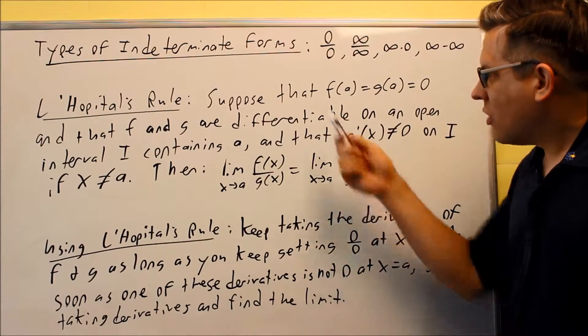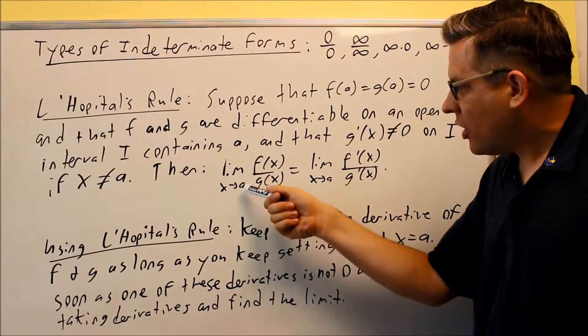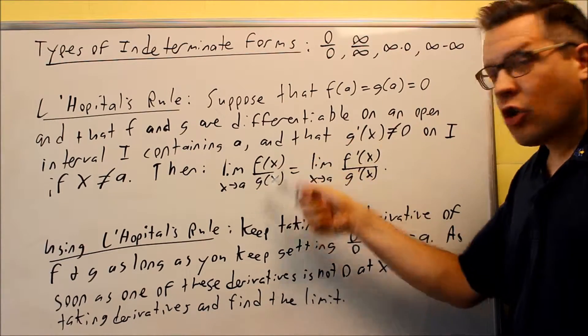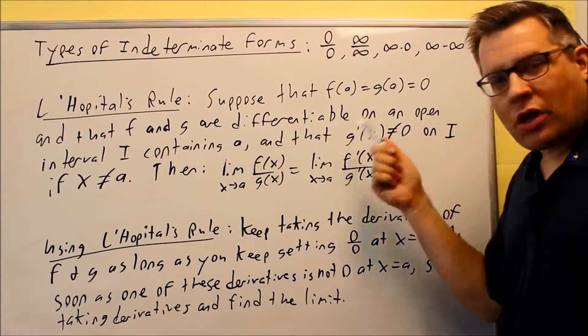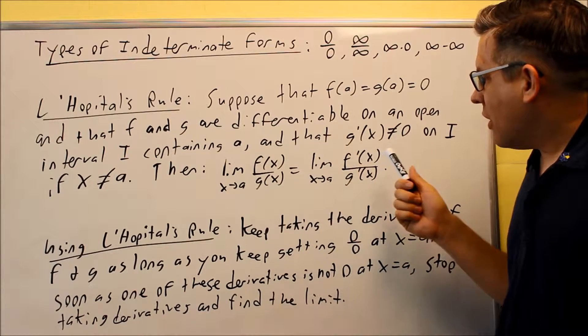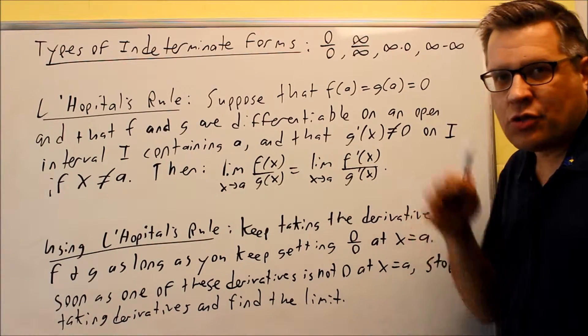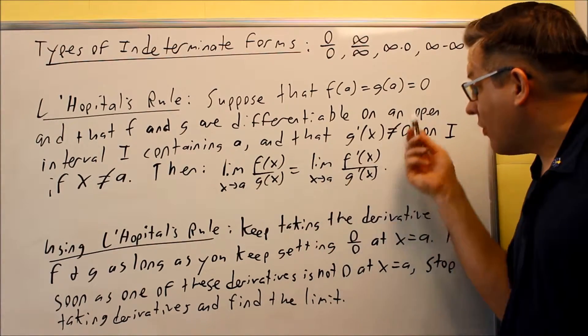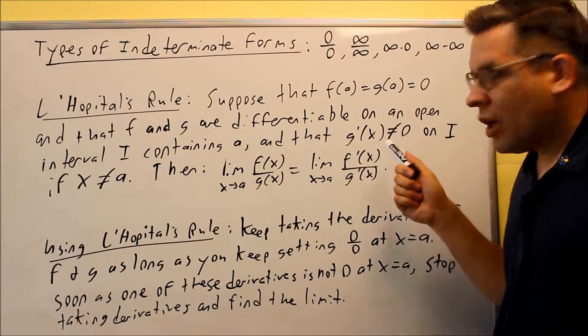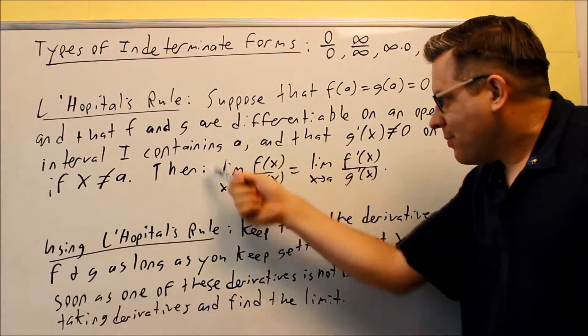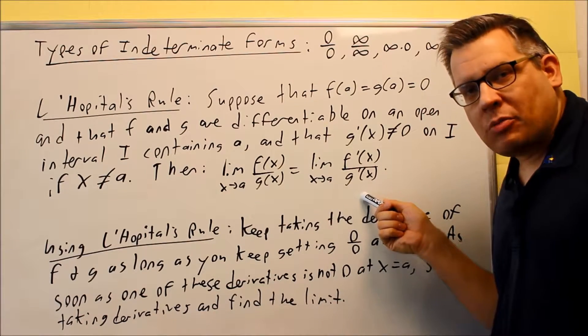We're looking at a situation where we have a limit as x goes to a. If I put a in there for x and I get 0 over 0, we're assuming that f and g are differentiable on an interval that contains a, and that the derivative g'(x) at any particular value of x is not equal to 0. Basically, I'm looking at g'(a). The normal limit, if I take the derivative of the top and the bottom, is still going to be equal to the same limit as the original one.